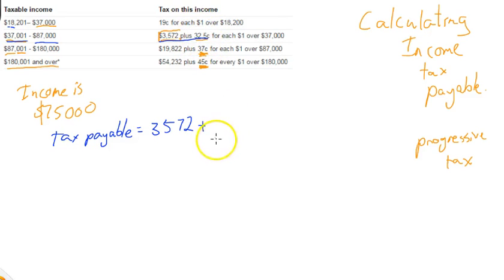I'm going to do 32.5%. So that's 0.325 multiplied by, for each dollar over $37,000. So I earned $75,000, so that's going to be $75,000 minus $37,000.